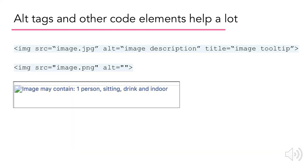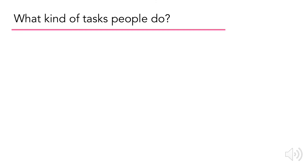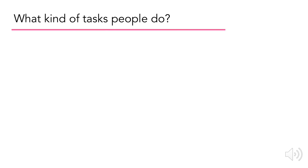Speaking of code, alt tags and other code elements help a lot. Making a site or digital product accessible mainly falls on the shoulders of developers, who have to include specific coding tags and elements in a website to make sure it's accessible. Those involved in product and design of digital software, or technical communicators who must document and troubleshoot software, must be aware of the types of tasks people perform and how challenging they might be on a physical or intellectual scale.